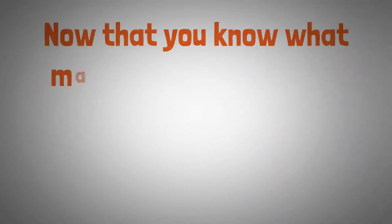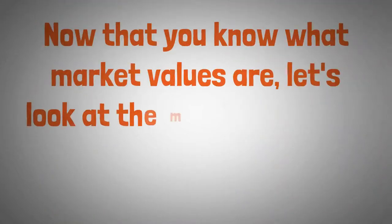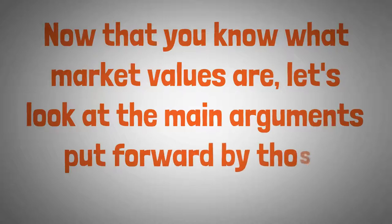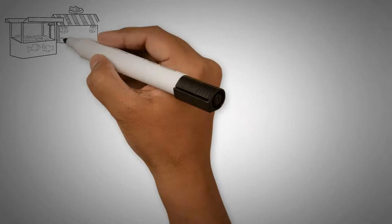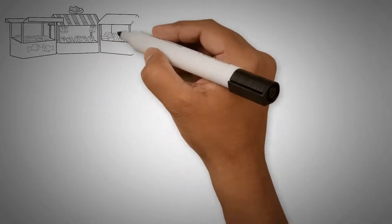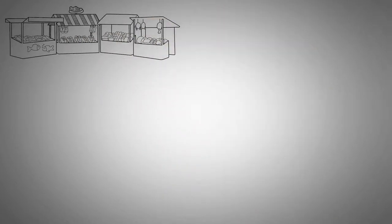Now that you know what market values are, let's look at the main arguments put forward by those who support them. Number one: The Efficiency Argument. Supporters claim that free markets are the most efficient way to distribute scarce resources in society. In a free market, prices act as signals and determine what goods are produced, in what quantities,